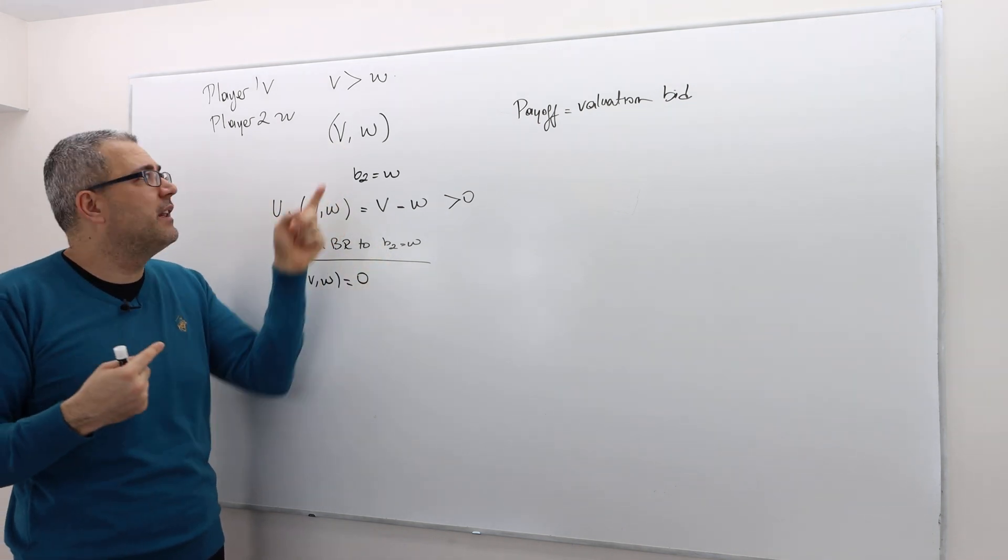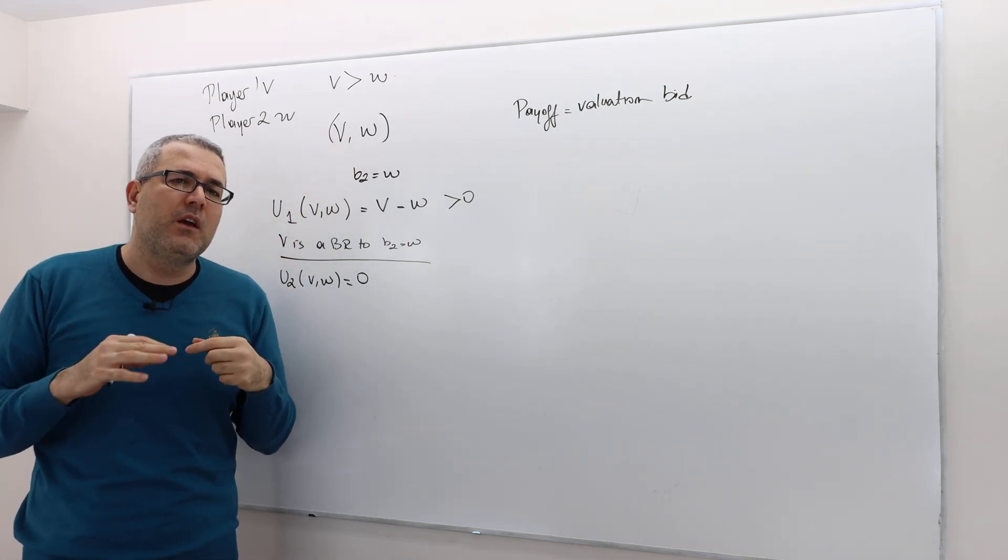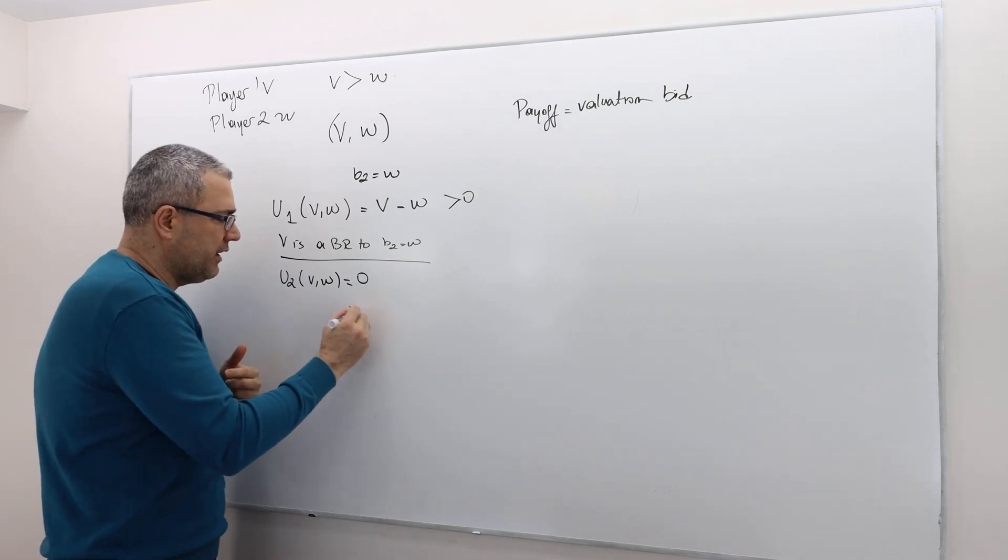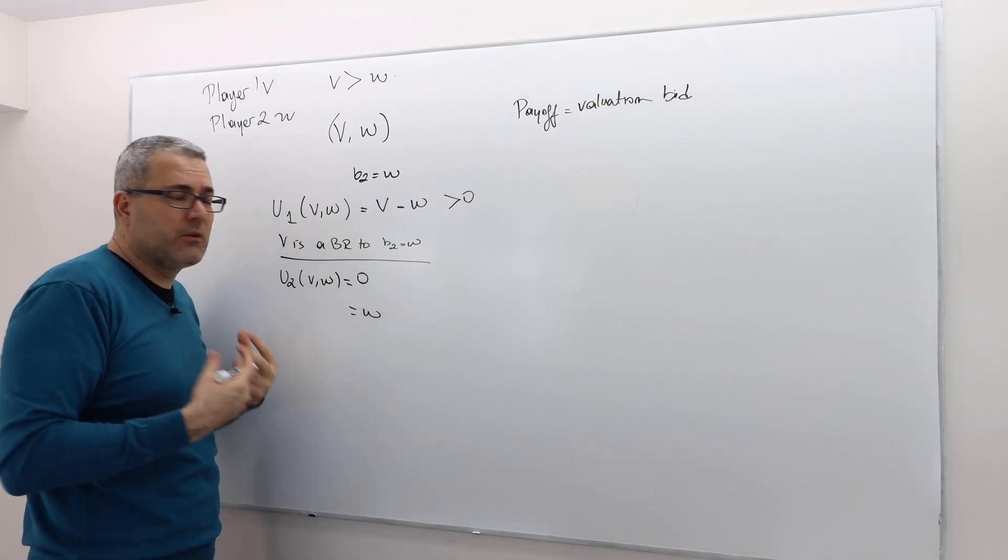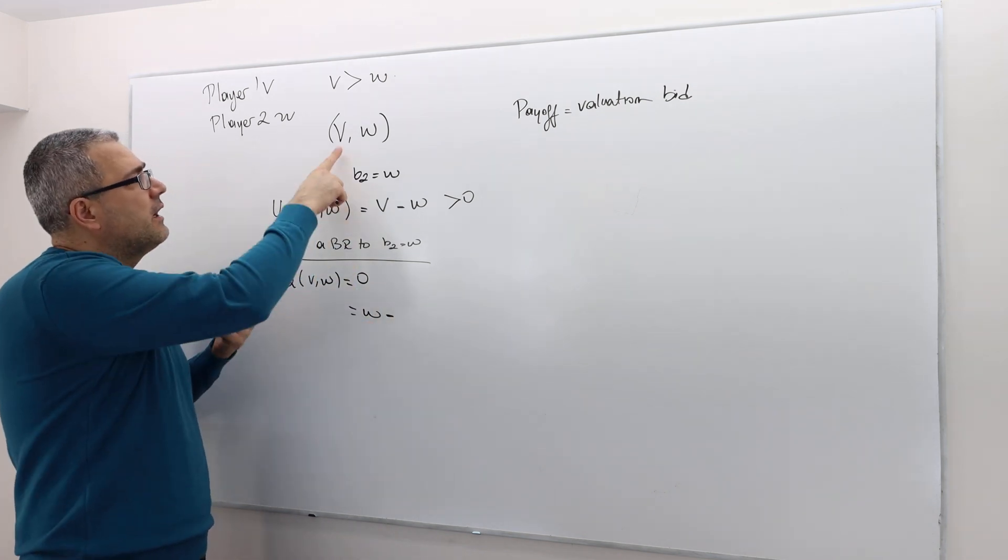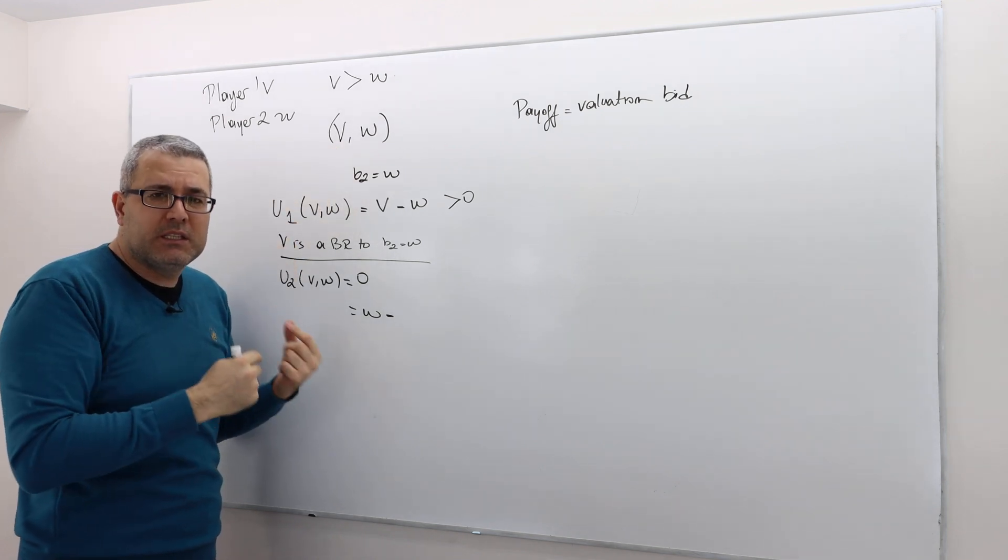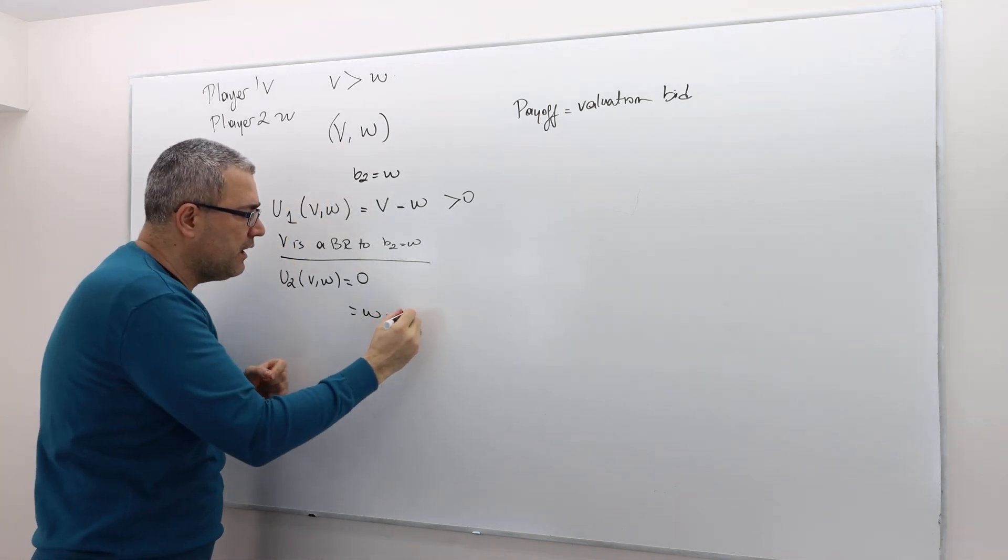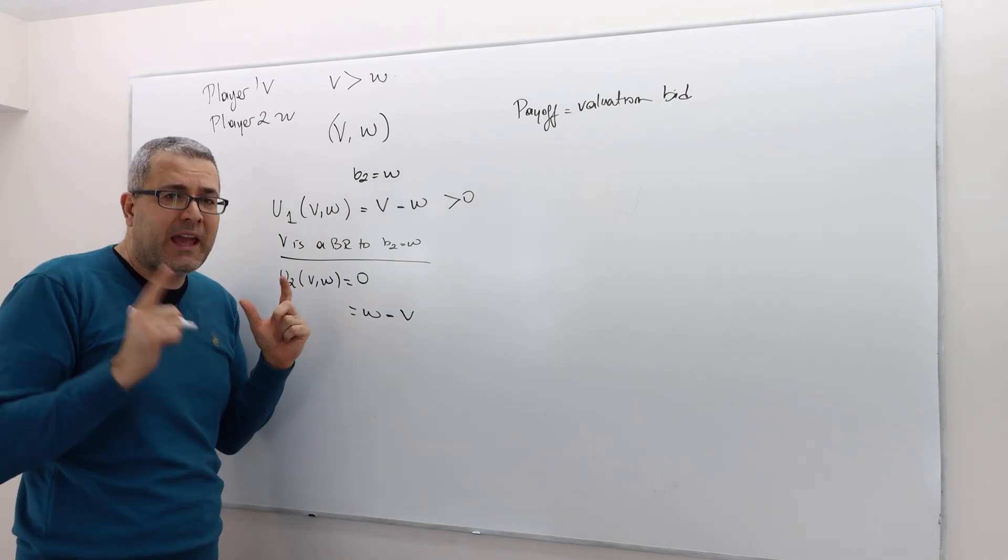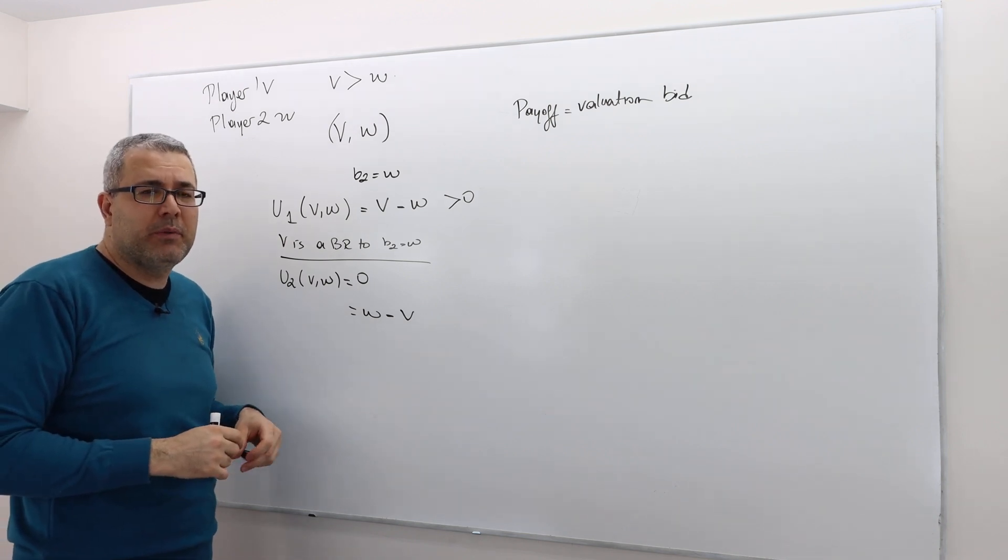If he wins, what happens is that he will have to pay, so he's going to get W because this is his valuation, minus the bid. Don't forget, if he wins, player one will lose. So, the losing bid is going to be V this time. So, V minus W is what player two's payoff will be. Again, if he wins under the circumstances that his opponent bid V. But we know V is greater than W, so this guy is negative.